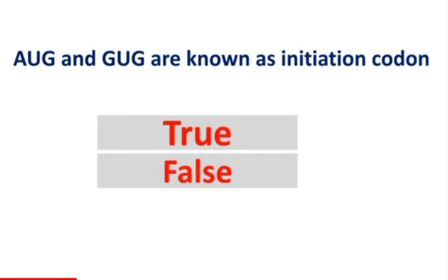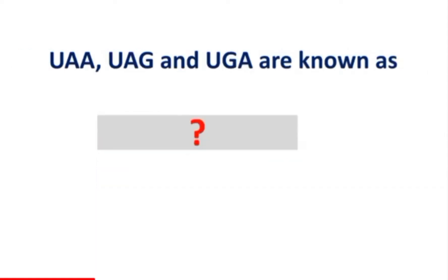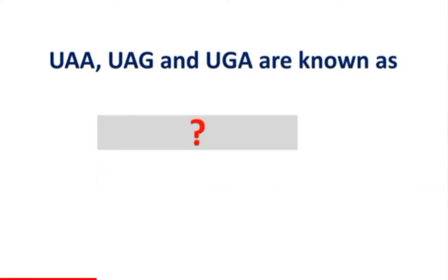AUG and GUG are known as initiation codons — true or false? UAA, UAG, and UGA are known as what?